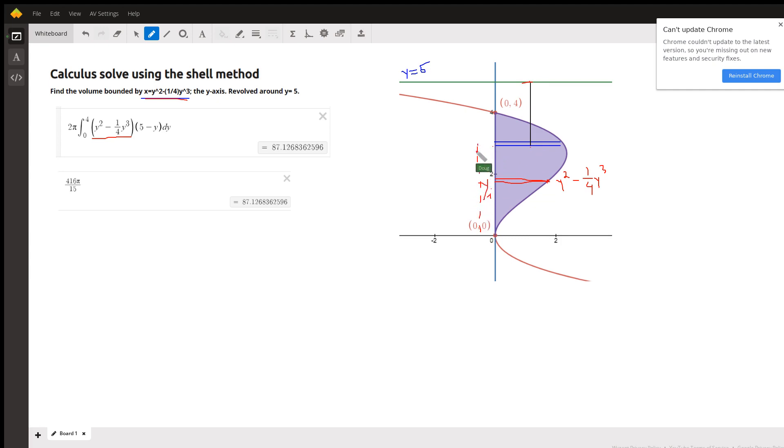So for each y, this is the value of y, but the height of the shell, or I'm sorry, the radius of the shell is top minus bottom, 5 minus y. So there's the average radius.